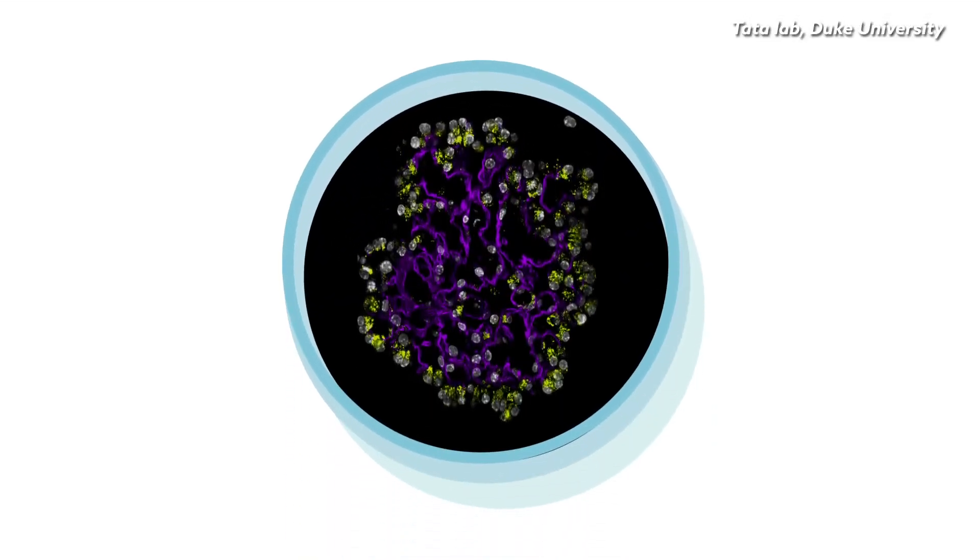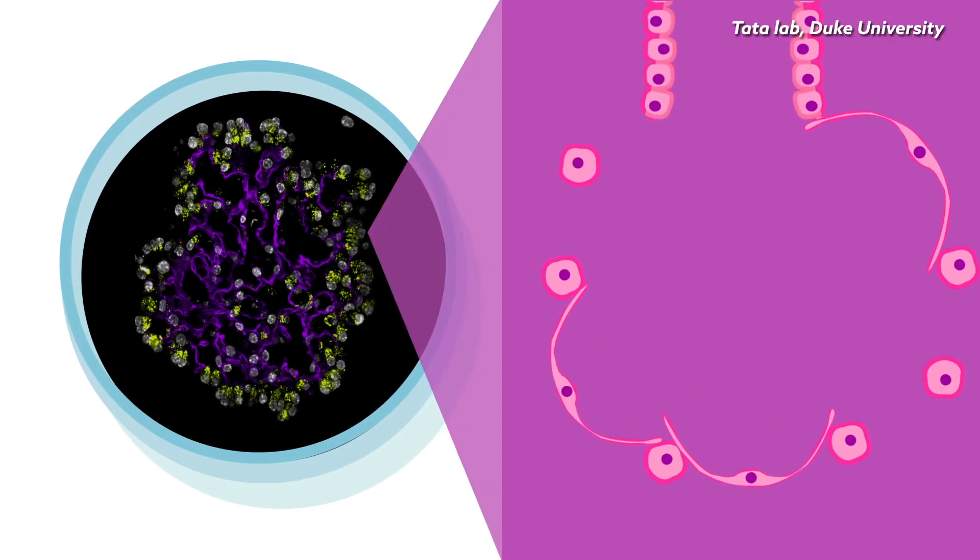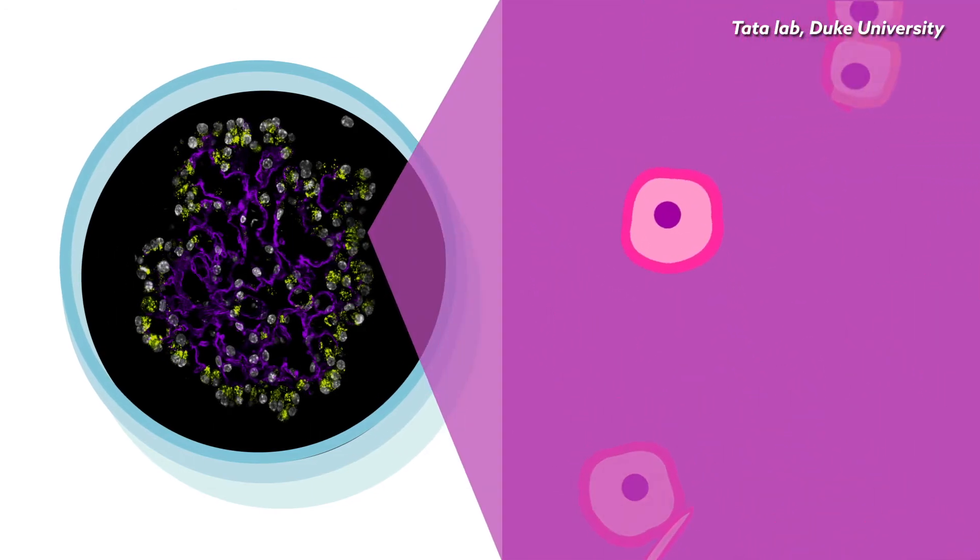To study this problem, the Tata Lab in Cell Biology at Duke University has created many lungs inside petri dishes. They found that inside these organoids, the blocky stem cells enter an intermediate state on their way to generating the thin AT1 cells.